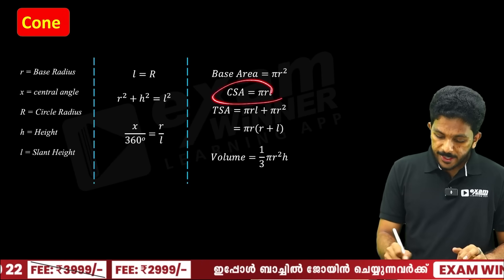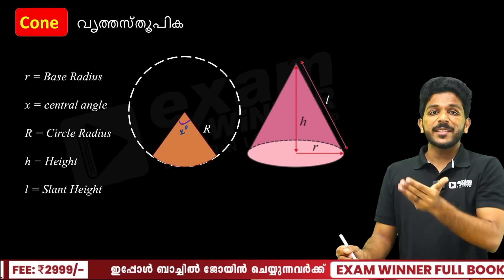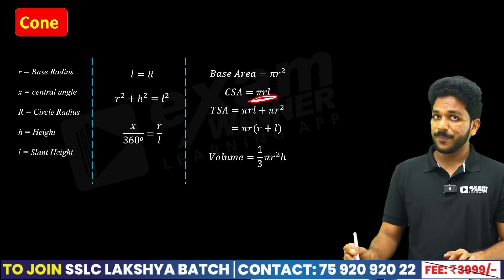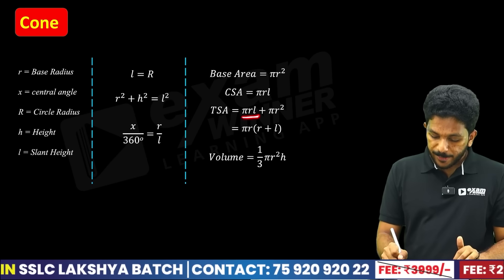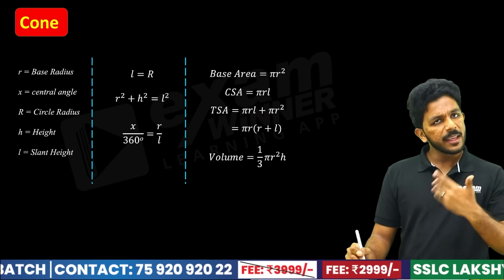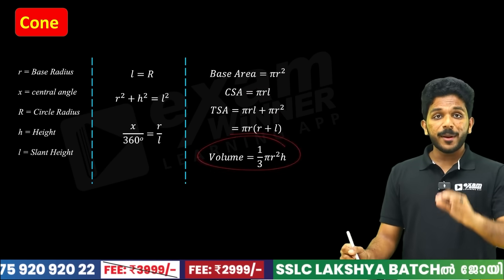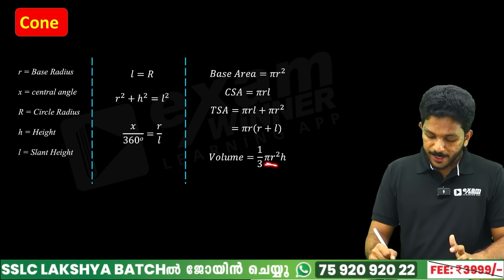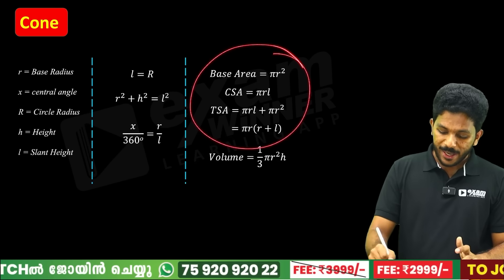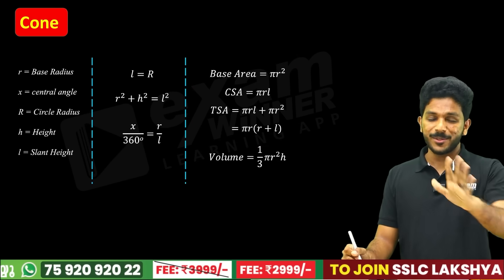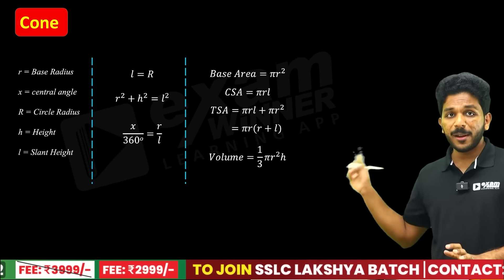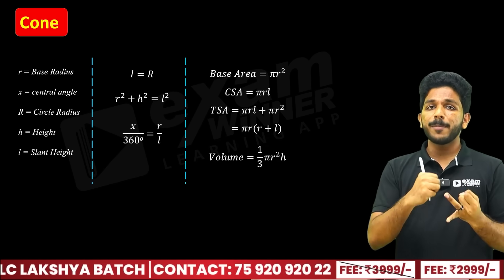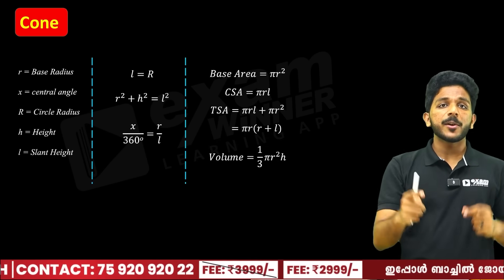The base area is πR². CSA (curved surface area) is πRL. TSA (total surface area) is πR(R + L), which equals πR² + πRL. The volume is 1/3 × πR² × H.